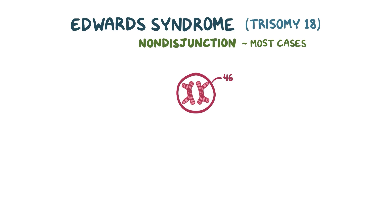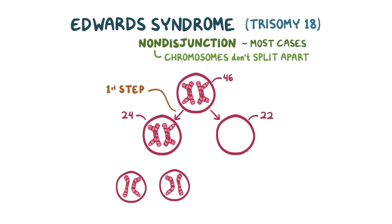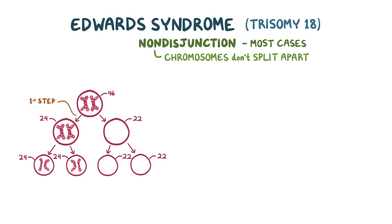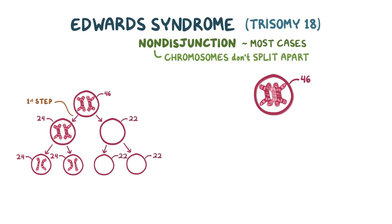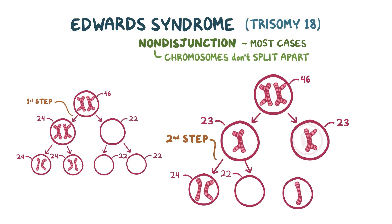Non-disjunction means that the chromosomes don't split apart. If the chromosomes in the first step don't split apart, then one cell ends up with both chromosomes, and the other gets none. The final result is two cells with an extra chromosome, and two cells missing one. Non-disjunction can also happen in the second step, so the first step goes just fine and both cells have a chromosome, but if they don't split apart in the second step, then the final result is one cell with an extra chromosome, one cell missing a chromosome, and two with the right number.